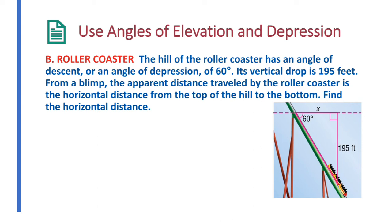So now using angles of depression here, a hill of a roller coaster has an angle of descent. Angle of descent here is an angle of depression, or an angle of depression as it says, of 60 degrees. So this is the angle of depression. So if it's going straight out and it's looking downwards, that's 60 degrees.